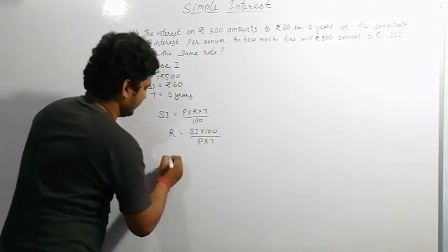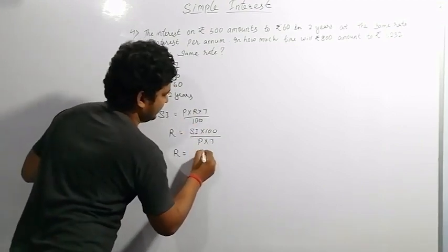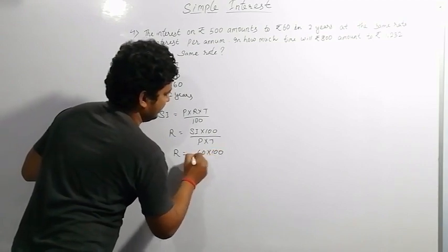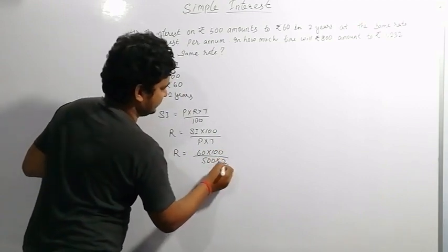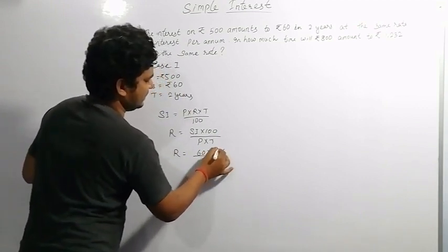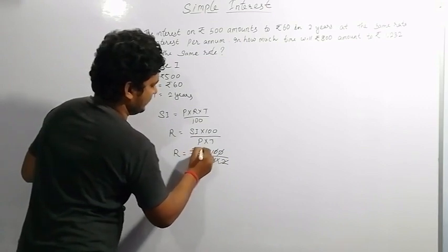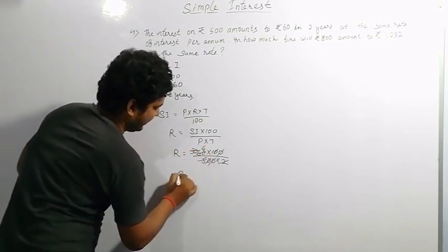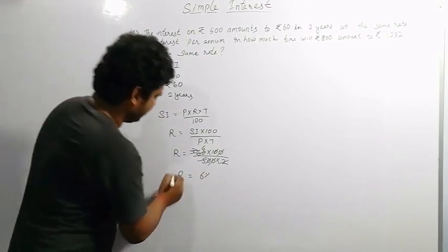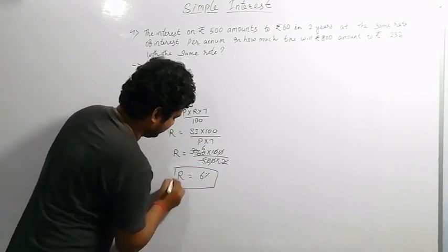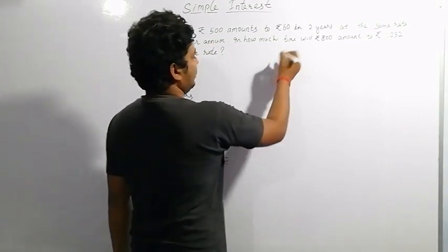Putting the values: rate equals 60 into 100 divided by 500 into 2. Simplifying, rate equals 6%. So the rate of interest is 6%.